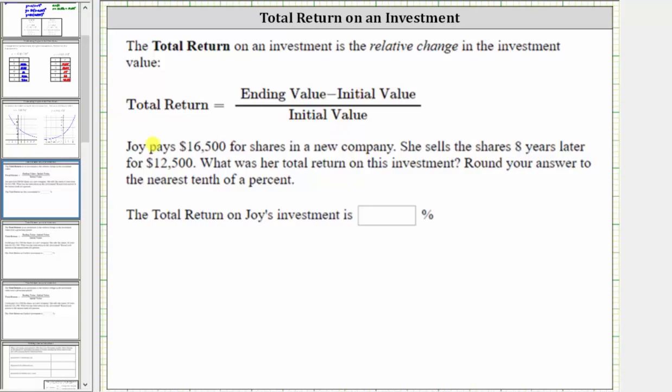Let's look at an example. Joy pays $16,500 for shares in a new company. She sells the shares eight years later for $12,500. What was her total return on this investment? Round your answer to the nearest tenth of a percent.